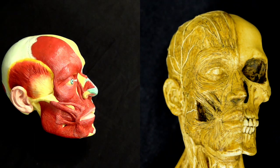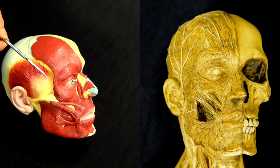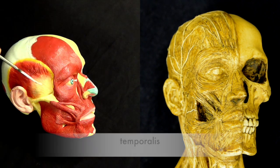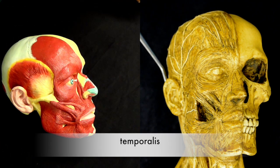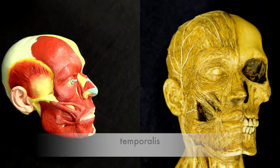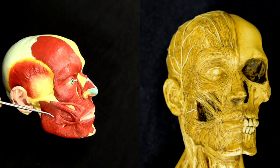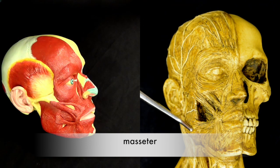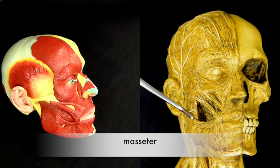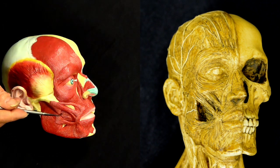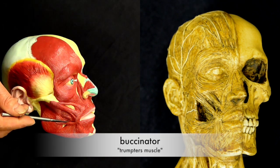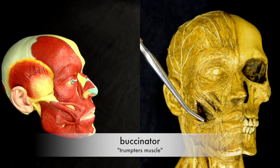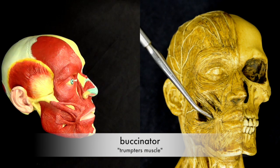Now we're going to look at the muscles of mastication. This broad fan-shaped muscle here is the temporalis, and on this model we can see it right here. Then this muscle is the masseter, and over here you can see it. Then this muscle is called the buccinator — it's used to hold food in the mouth and is also called the trumpeter's muscle, and we can see it here.